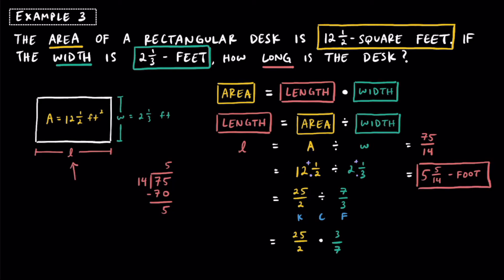We know the length is 5 and 5 fourteenths, so we're done with the problem. But if you want to check, you can use multiplication — take the length of 5 and 5 fourteenths and multiply it by the width of 2 and one third. If done correctly, you should get 12 and a half, which was the area of the rectangle. Let me know in the comments if it works. We've now completed three examples solving application problems involving multiplying and dividing fractions.